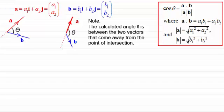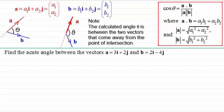Now I want to take you through an example of how we work out the angle between two vectors and it also demonstrates a very important point. And here it is. We've got to find the acute angle between the vectors A equaling 3i plus 2j and the vector B which equals 2i minus 4j.